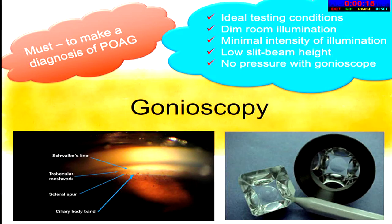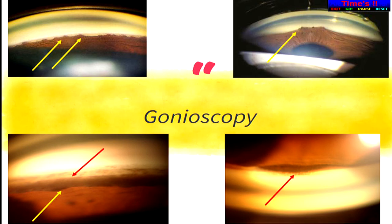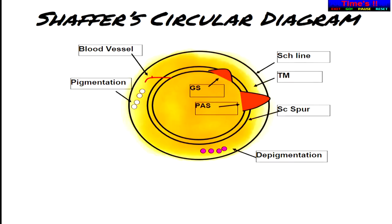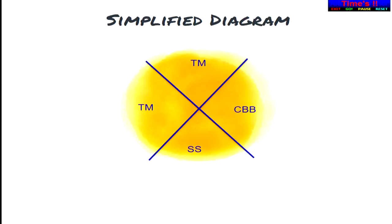Gonioscopy is extremely important to make your diagnosis. You need to see all structures: Schwalbe's line, trabecular meshwork, scleral spur, ciliary body band, and root of the iris. You might see peripheral anterior synechiae, angle recession glaucoma, a hiding ciliary body tumor, or a foreign body. Documentation is extremely important — draw peripheral anterior synechiae in orange, depigmentation in purple, pigmentation in white surrounded by a black line, and blood vessels in red. Label everything properly to maintain your data.